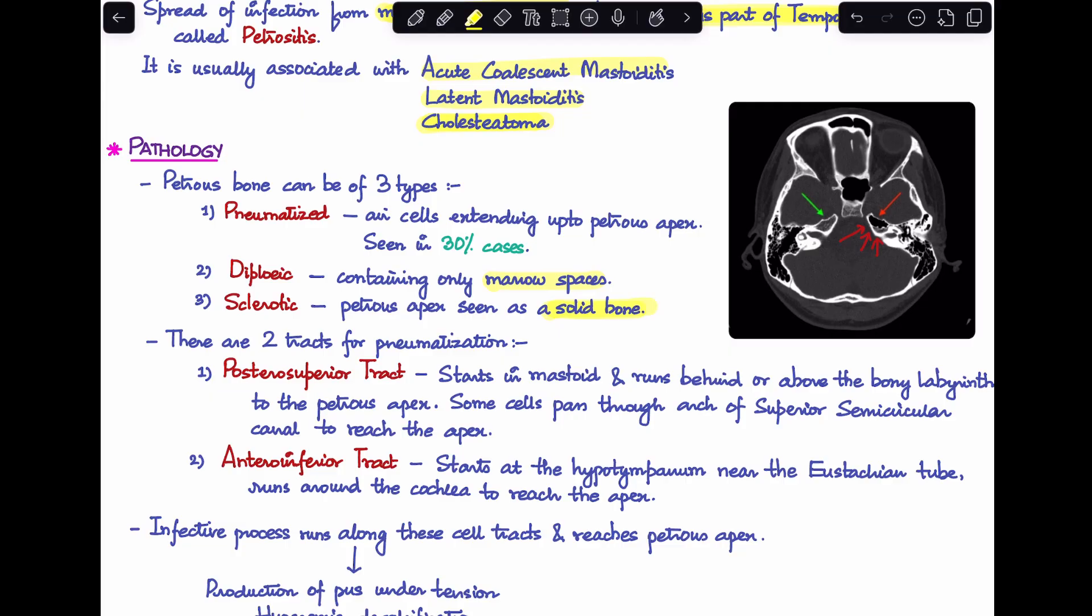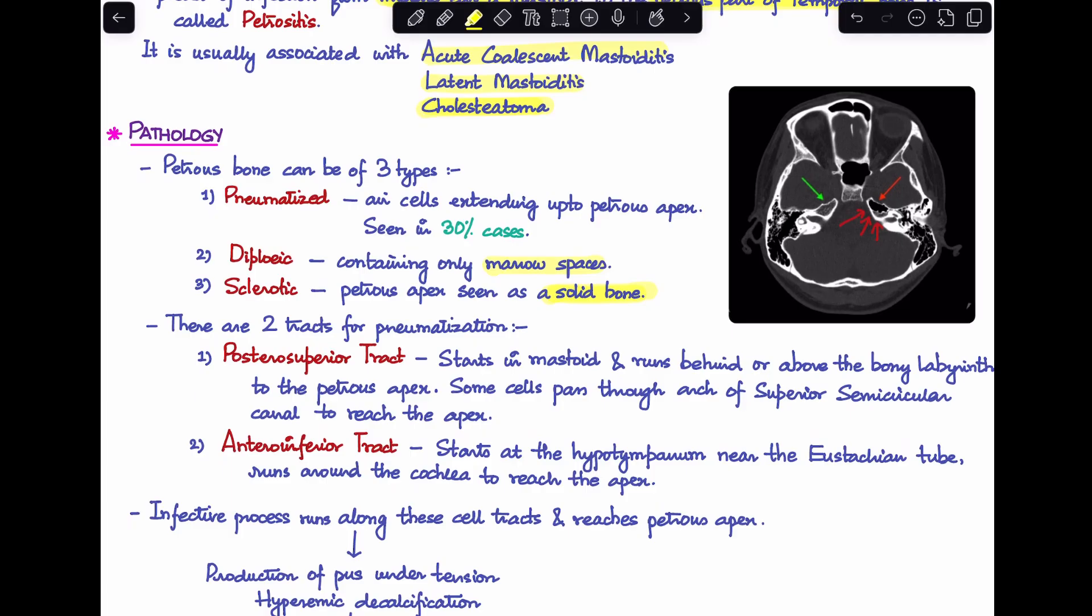Now there are two tracts for this pneumatization that a petrous bone undergoes. One is the posterior superior tract and second is an anterior inferior tract. The posterior superior tract starts up in the mastoid and it runs behind or above the bony labyrinth to reach the petrous apex. Some cells can even pass through the arch of superior semicircular canal. The anterior inferior tract starts at the hypotympanum near the eustachian tube opening and it runs around the cochlea to reach the apex.